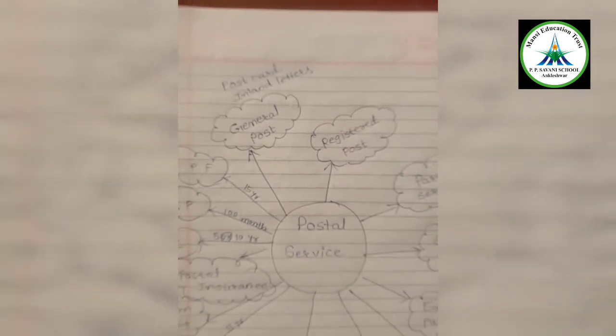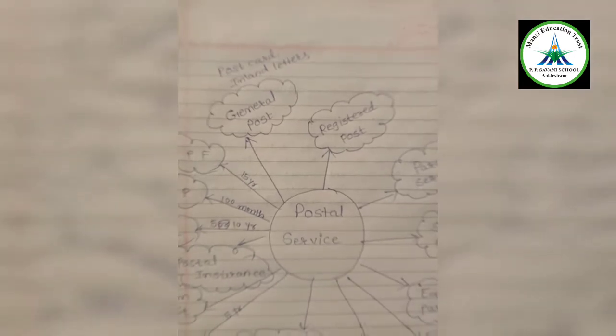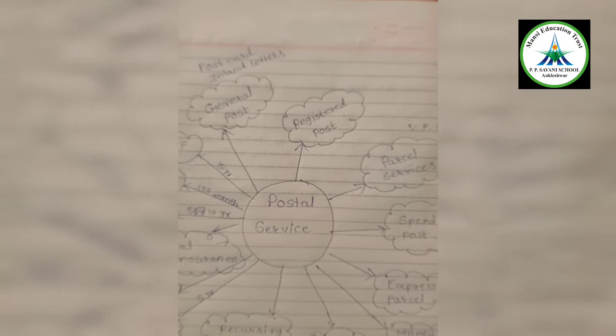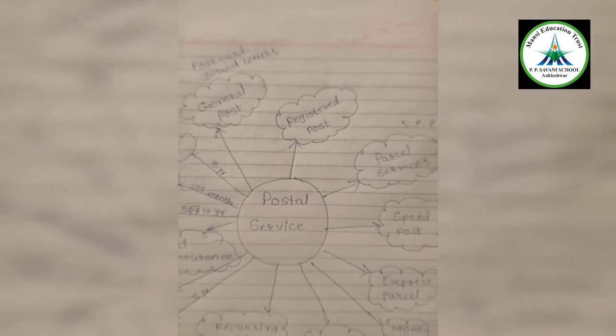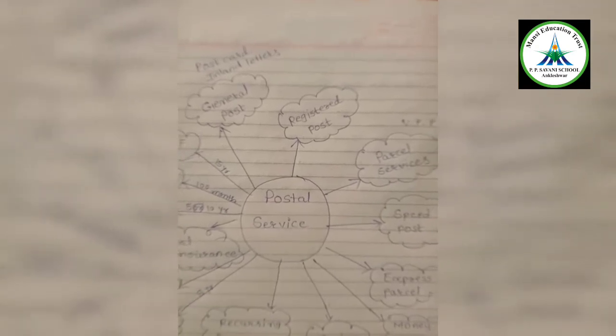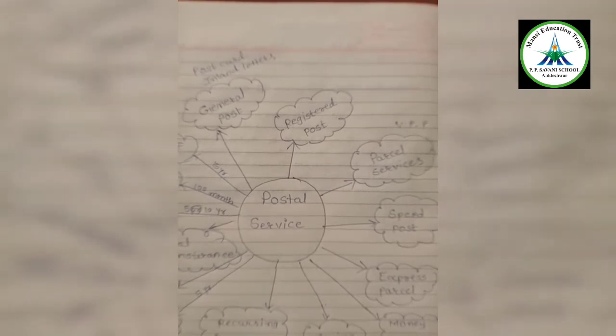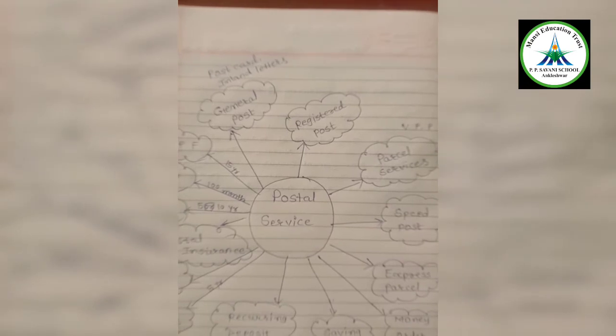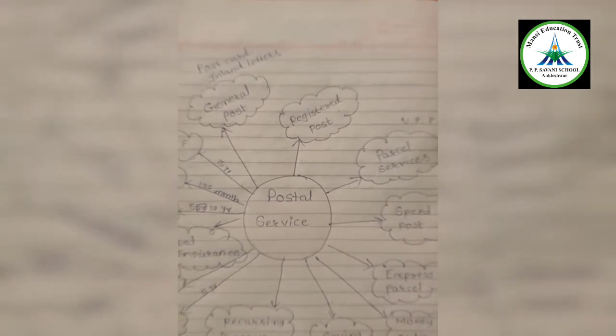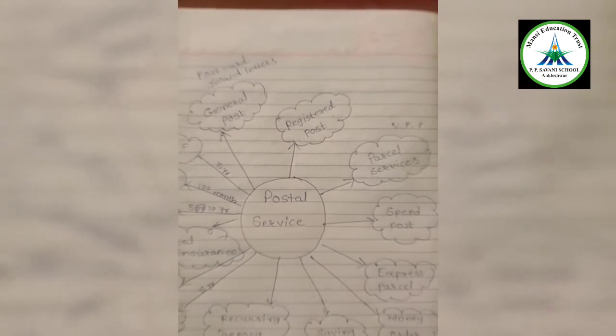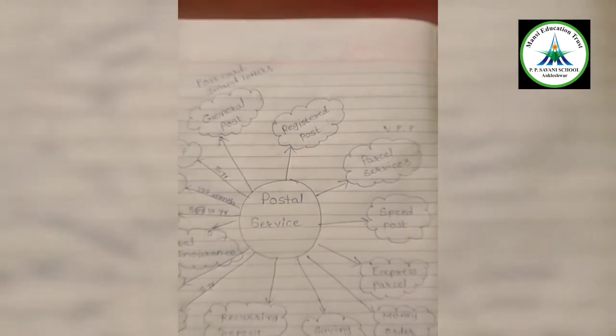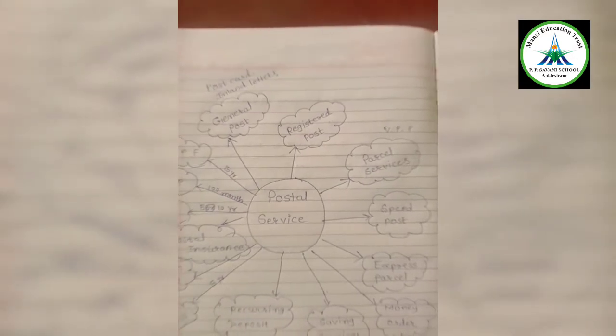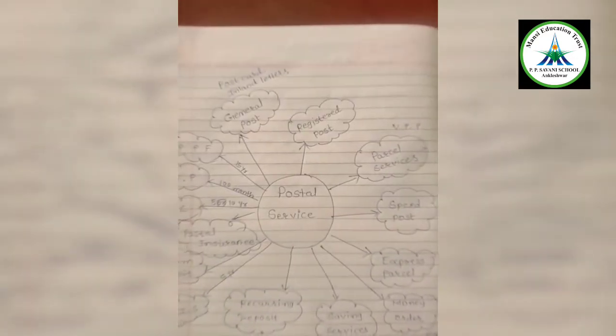Starting with general post, so general post is that we are sending letters and postcards for communication and information. Next is registered post. Registered post is also delivered by the postal department in which some charges you have to pay which is more than general post communication. And if sender requires a proof in the form of signature of the receiver, signature can be there but you have to pay some extra for that.